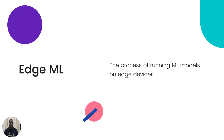So what is edge machine learning? It's simply the process of running machine learning models on edge devices. We're not talking about training models on edge devices — that would ask too much of those devices. The focus is on how you can run pre-trained machine learning models on edge devices.